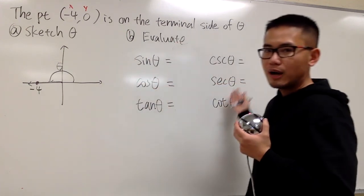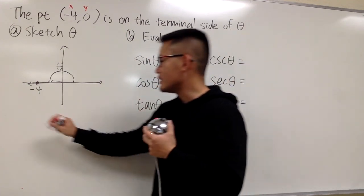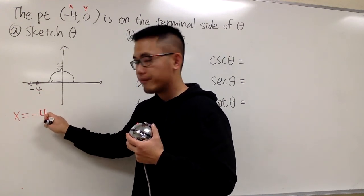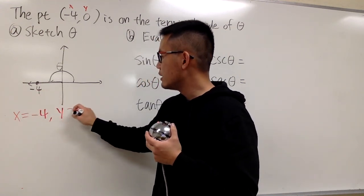Okay, so in order to figure this out, we are going to do this carefully. x is equal to -4, and the y value is 0.